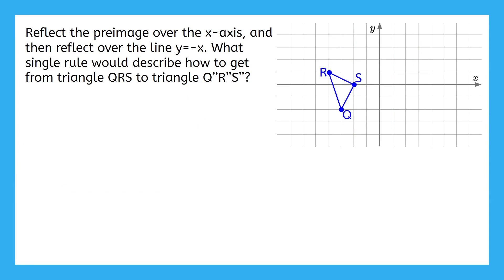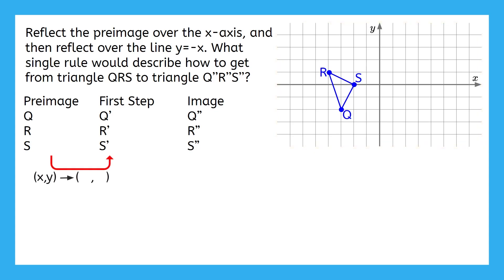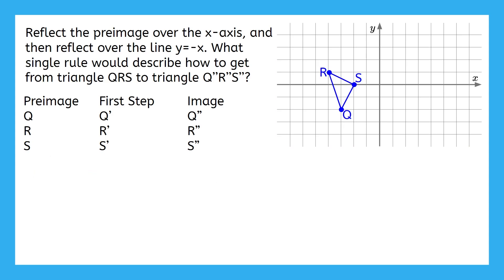This is our final example for today. This time we're supposed to reflect over the x-axis, and then the line y equals negative x. Find the points on the pre-image, first step, and image using both methods this time — sketch on a coordinate plane, and create and use the rules for each step. Using both methods will give you extra practice and ensure that you've checked your work. Pause the video now to try this on your own.